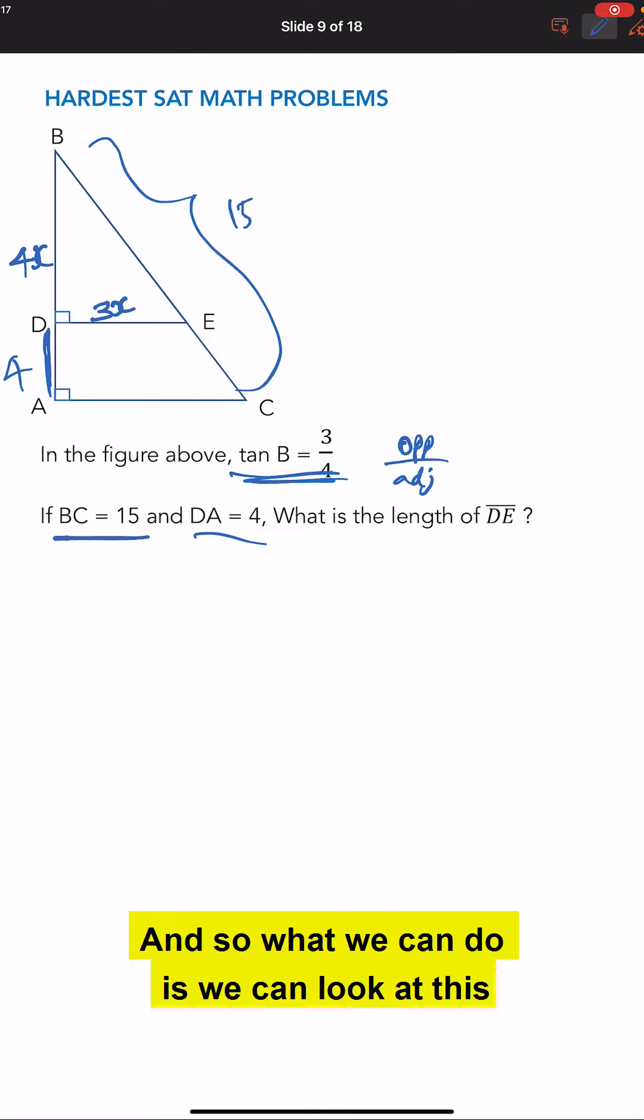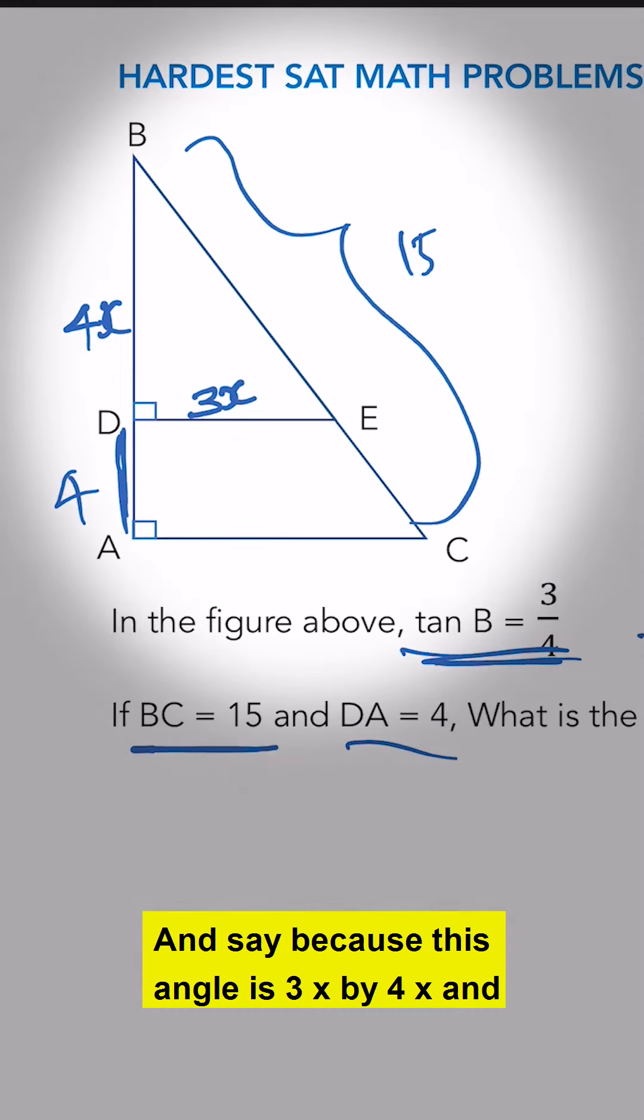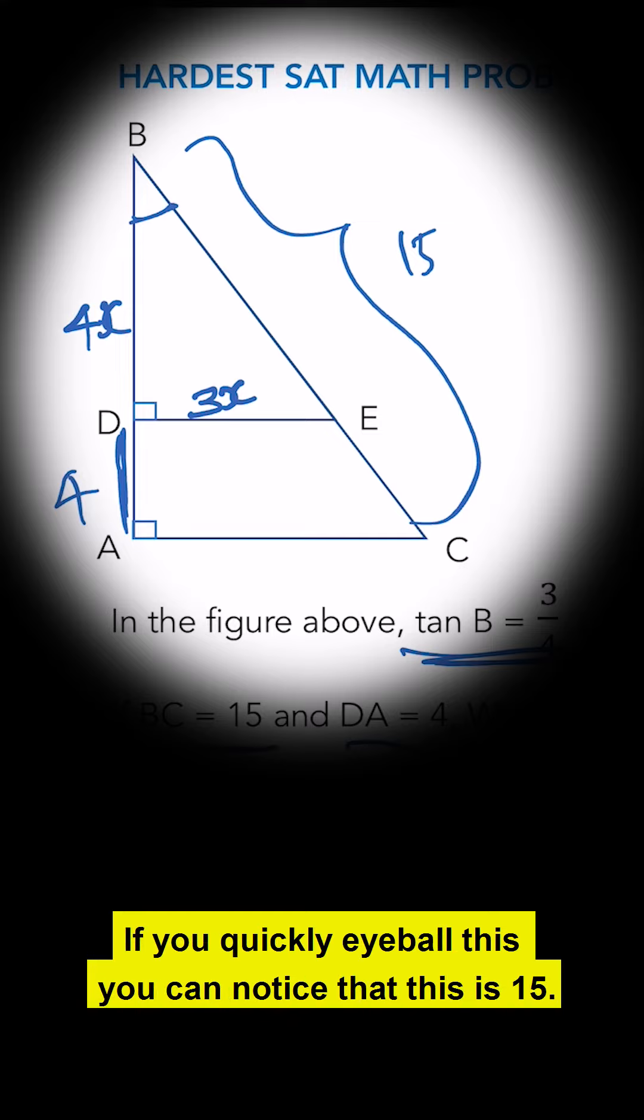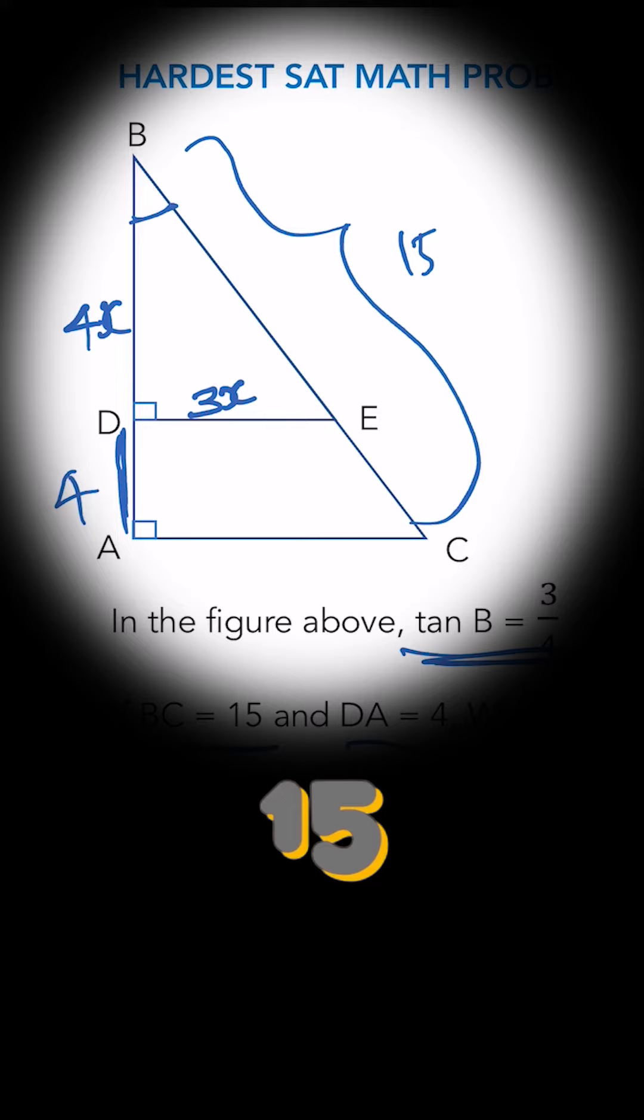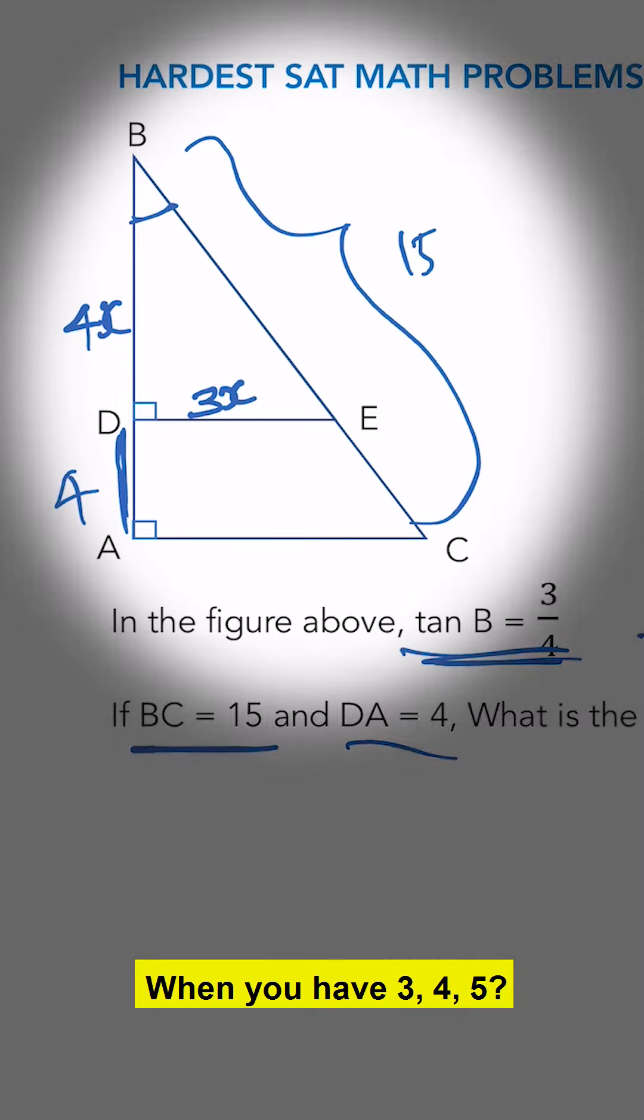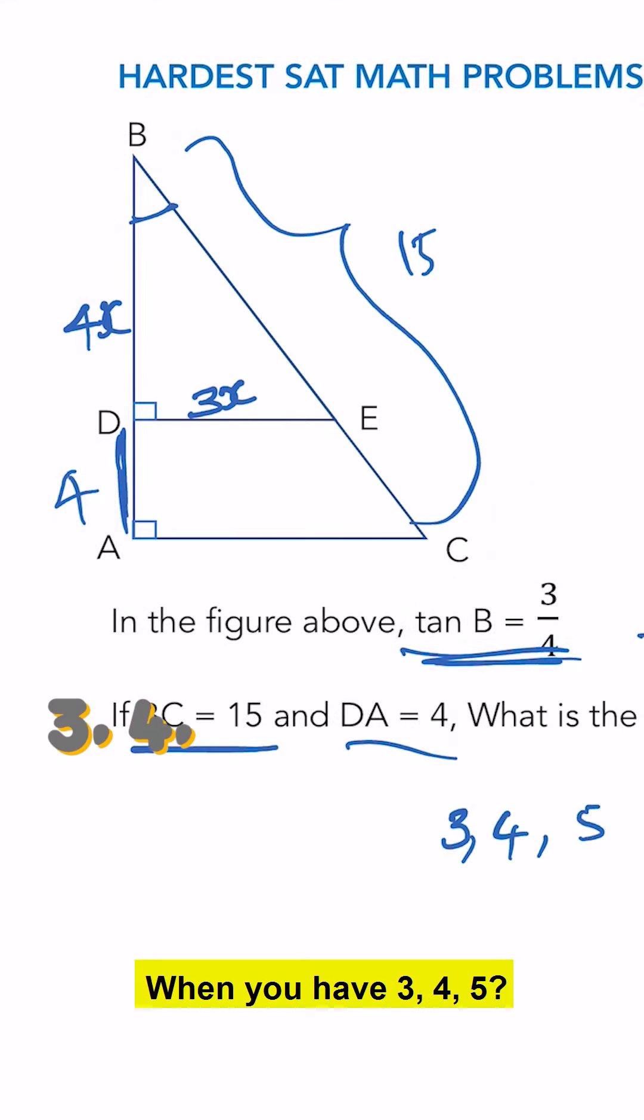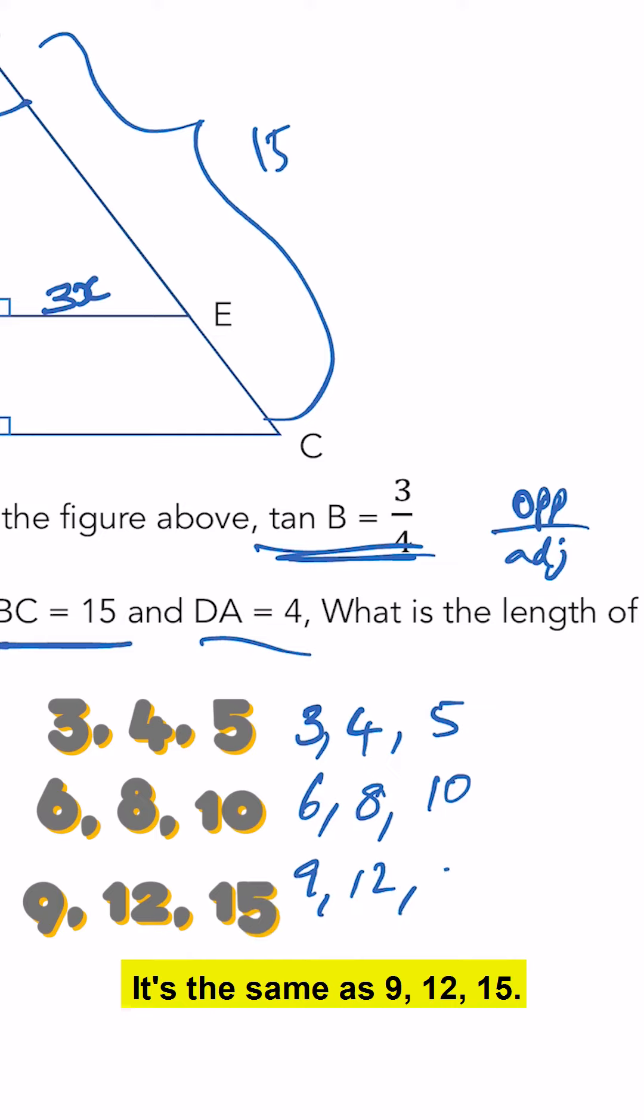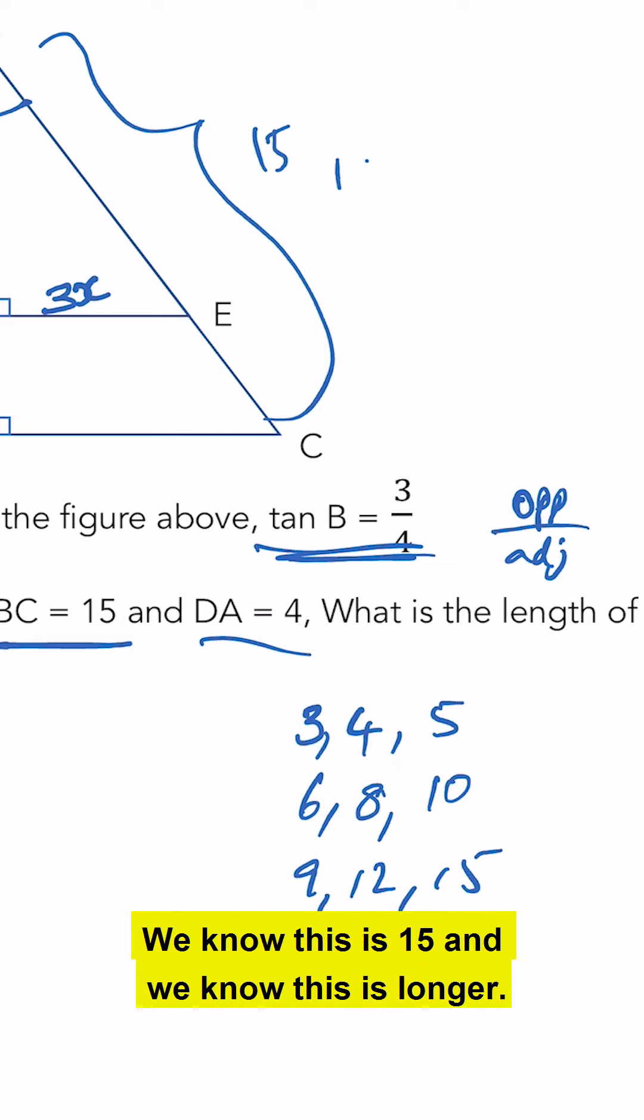And so what we can do is we can look at this and say, because this angle is 3x by 4x, and if you quickly eyeball this, you can notice that this is 15. So what is 15 when you have a 3, 4, 5? This is the same as 6, 8, 10. It's the same as 9, 12, 15. We know this is 15. And then we know this is longer.